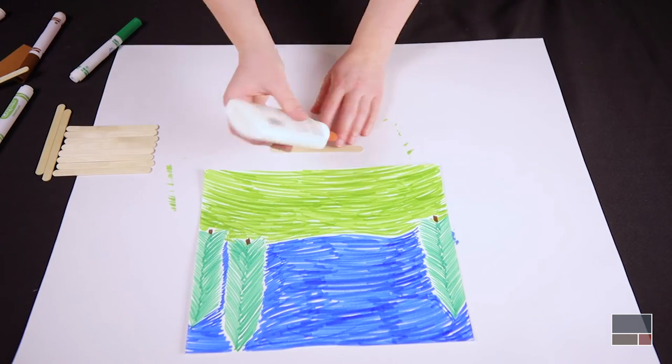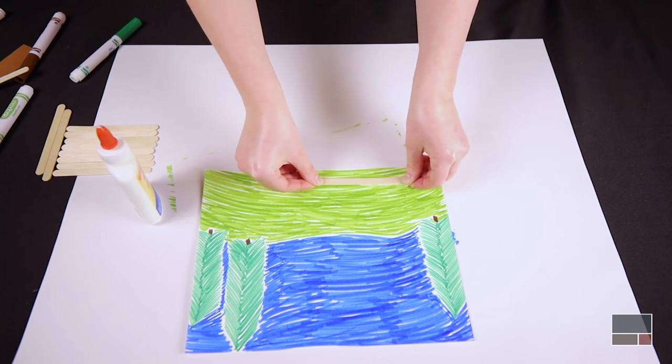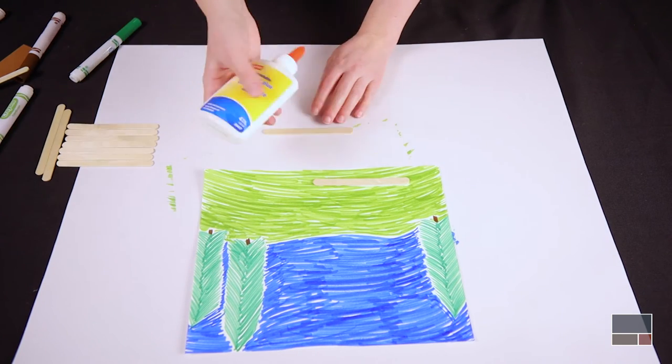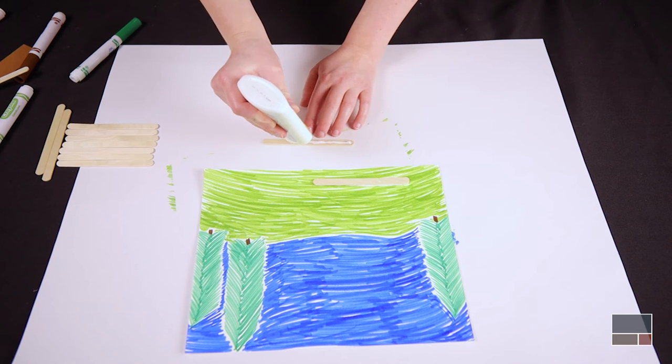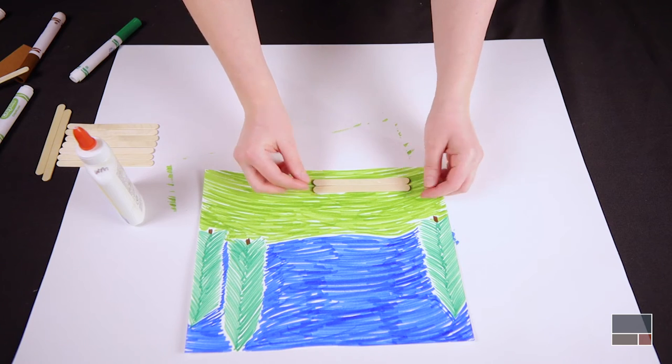Now we can build our lodge. Decide where on your setting you want to place your lodge. Put glue on the back of the popsicle sticks and place them in a row on your setting. You can use extra sticks to make your lodge taller or make it shorter by using fewer sticks.